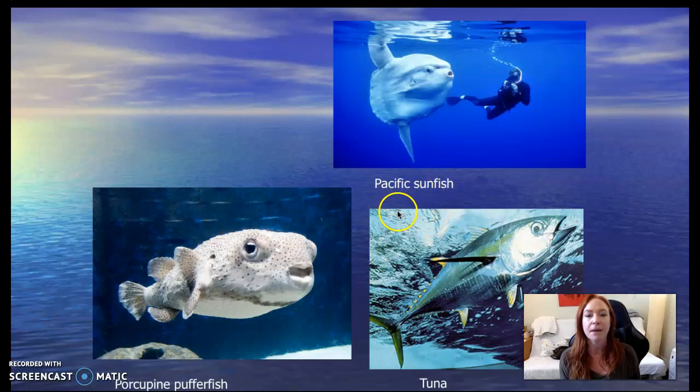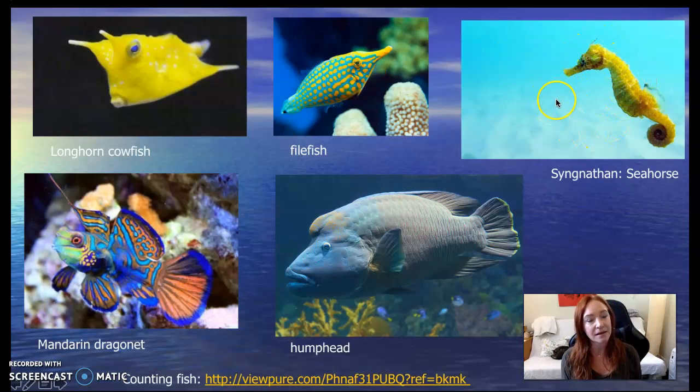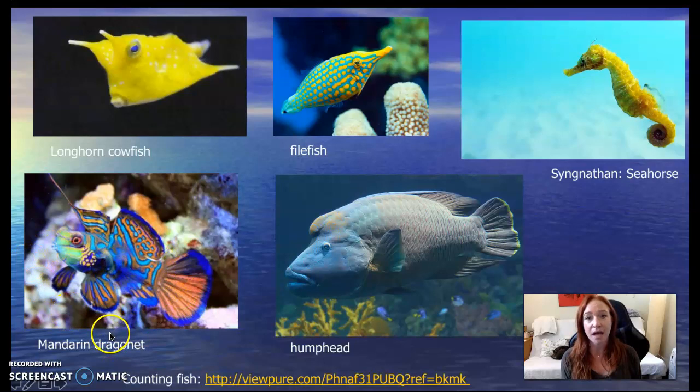Here are some more examples. These are some of my favorite fish and they are not pelagic fish — these are reef and kelp forest fish. Longhorn cowfish — oh my God, they're cute. Filefish — so pretty and colorful. And then this is a syngnathid, also known as a seahorse. They're kind of the epitome of weird in fish but they're great. This is my favorite fish of all time — the mandarin dragonet. And then this is a humphead wrasse, a huge fish that is a keystone species in the kelp forest.